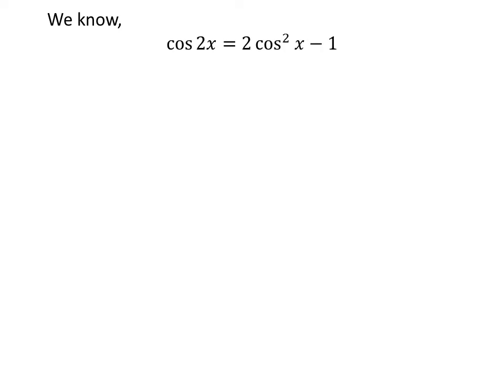We know the famous trigonometry identity: cosine of 2 times x is equal to 2 times square of cosine of x minus 1. The proof of this trigonometry identity has been explained in the video appearing in the upper right corner of this video. The link of the video is also given in the description section.